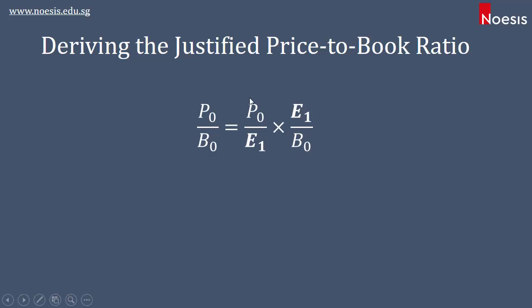For the first term, the leading PE ratio from the constant growth model, this would be equal to the dividend payout ratio, which is 1 minus B, and B would be your retention rate over the cost of equity minus the growth rate.